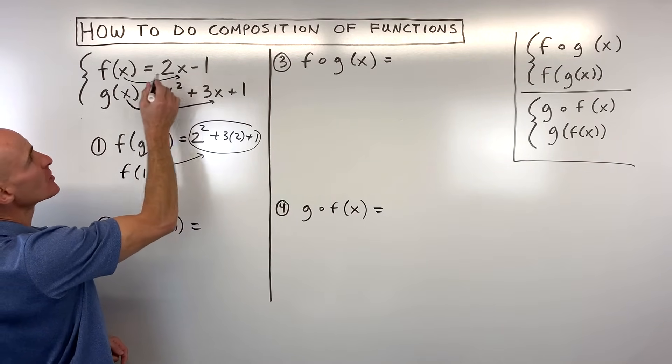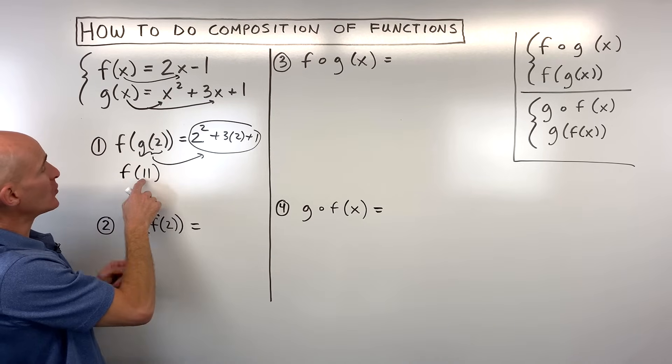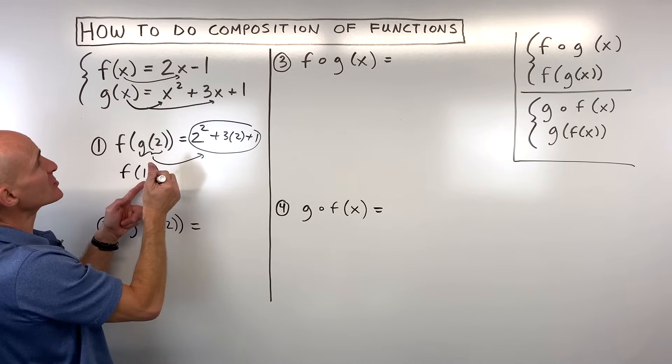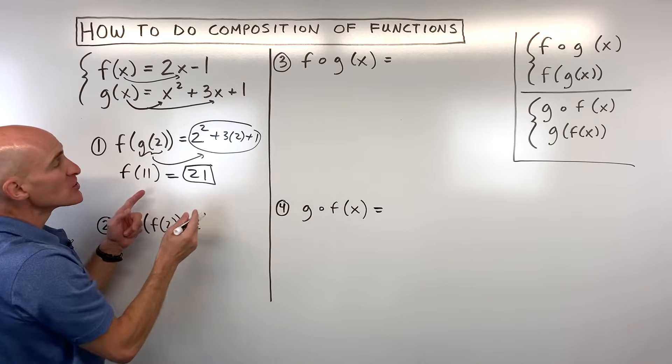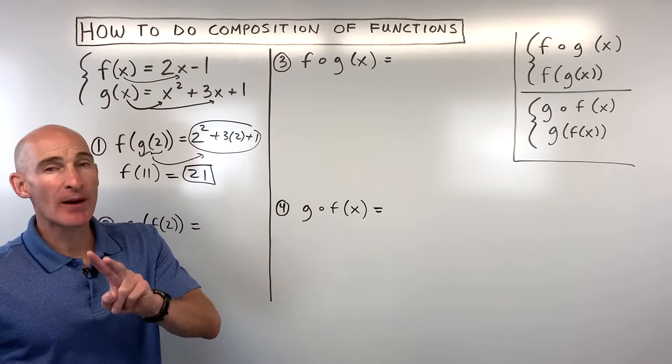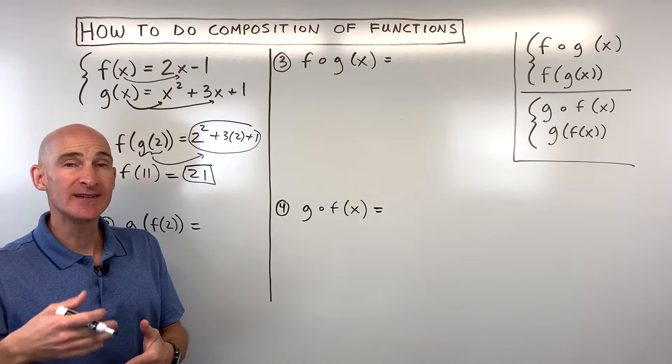So we're going to go to our f function. Whatever's in parentheses we're going to put that in for x on the right. So now we have 11. So 2 times 11 is 22 minus 1 is 21. So you can see what this is. It's like a two-step process or I like to sometimes call it a double substitution.